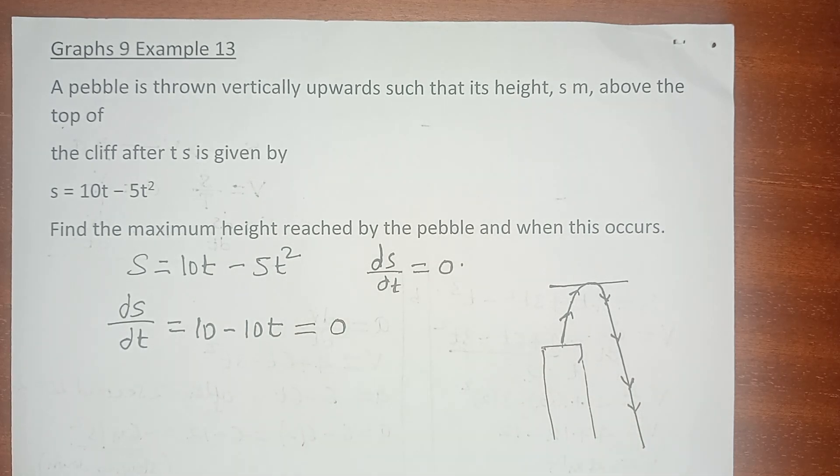So this by all means is going to be zero. In other words we are saying 10t = 10, divided by 10, and therefore t = 1. It is going to reach maximum height after one second.